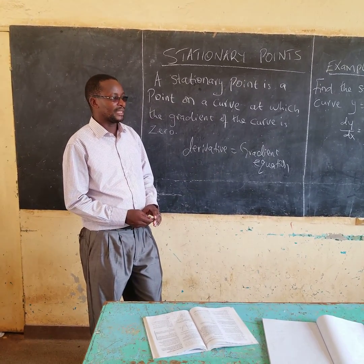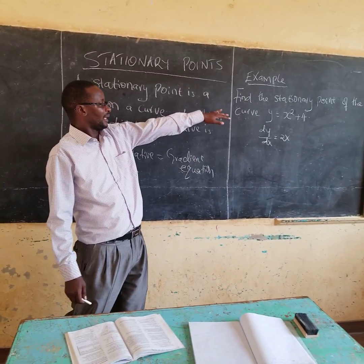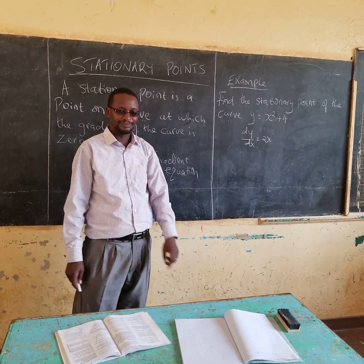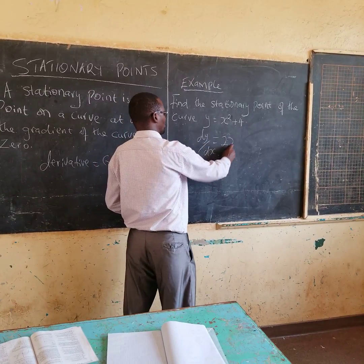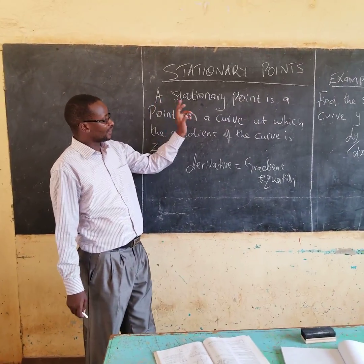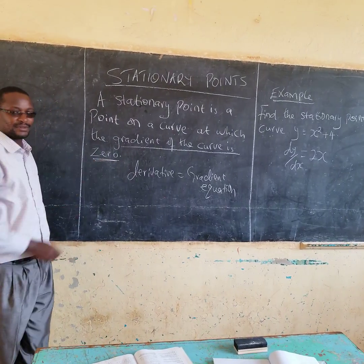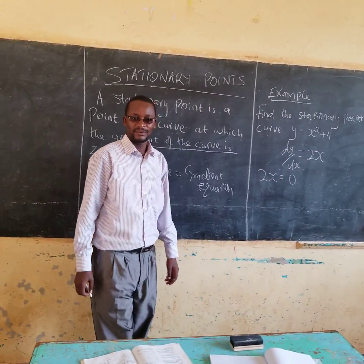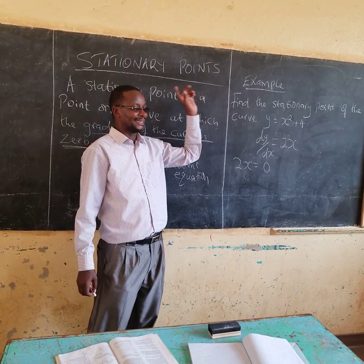There are several stationary points and they take different natures. But before we go to the nature of the stationary points, I want us to take an example and find the stationary point of this curve: y is equal to x squared plus 4. When you differentiate this, dy/dx is equal to 2x. Back to the definition of a stationary point — a stationary point is a point at which the gradient of the curve is zero. So it means that this gradient, 2x, is equal to zero.